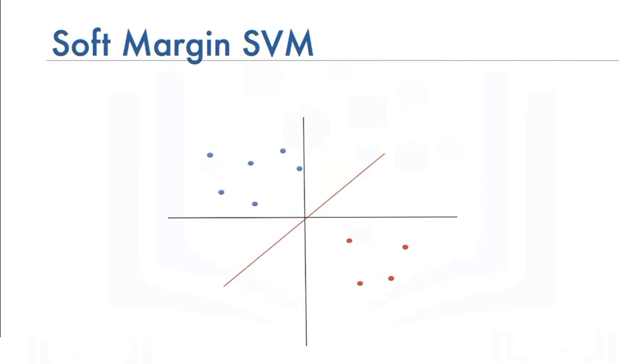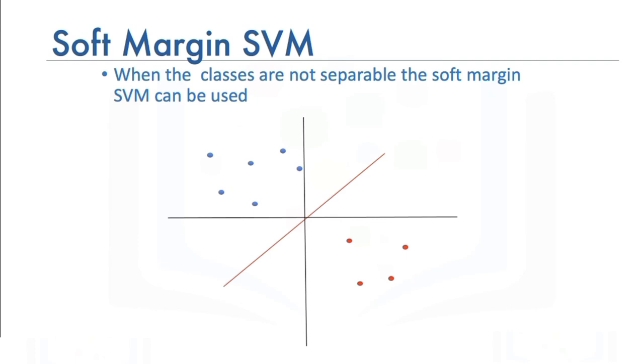When the classes are not separable, the soft margin SVM can be used. This is usually controlled by the regularization parameter. This allows some samples to be misclassified. We select gamma in the regulation parameter C by using the values that do best on the validation data.